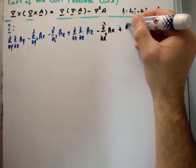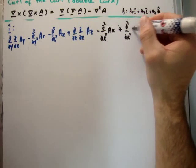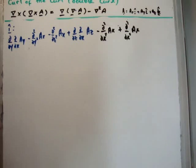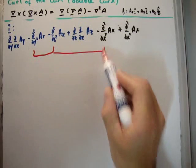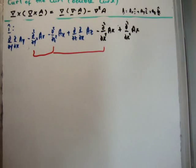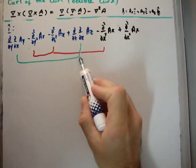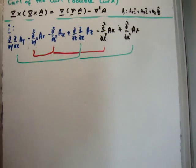And we're going to add del squared del x squared A sub x. Of course we've done nothing to the expression, we haven't changed the value. So we're going to group this term and this term and this term. And we're going to group these three terms here. And if you do that, the expression you're going to get is as follows.